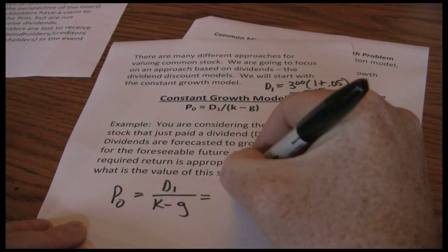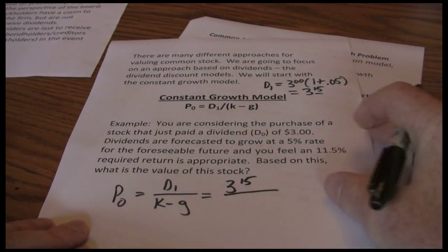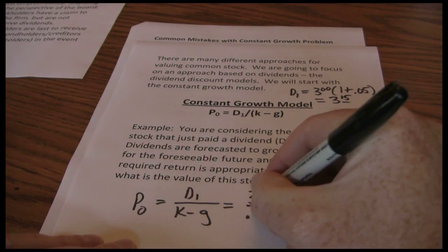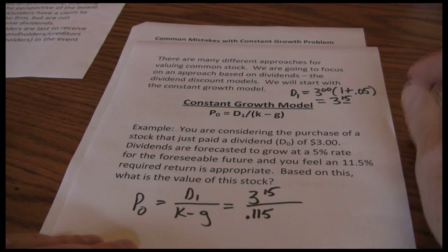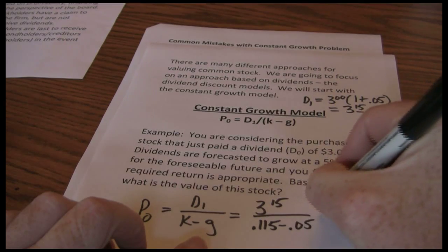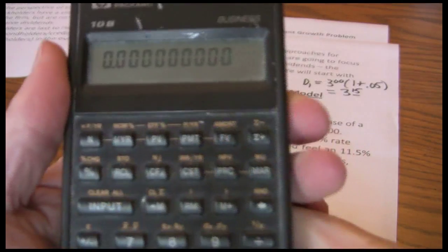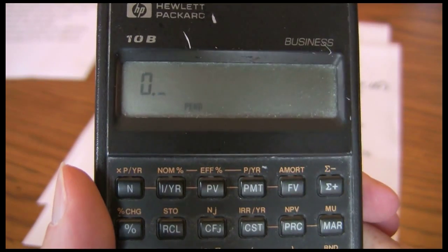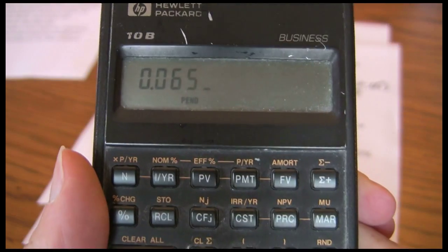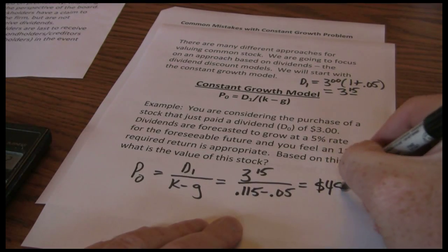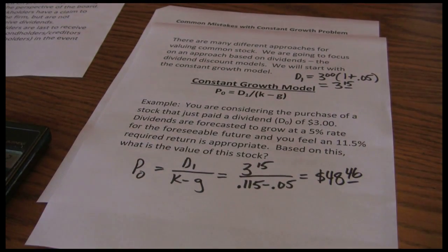Now we can go back to our model: three dollars and fifteen cents divided by the required return. The required return was 11.5%, plugged in as a decimal — 0.115 — minus the growth rate of five percent, plugged in as a decimal. Required return minus the growth rate is six point five percent. That gives us a value of forty-eight dollars and forty-six cents. So based on our assumptions, this stock is worth forty-eight dollars and forty-six cents — that's the maximum we should be willing to pay for the stock.